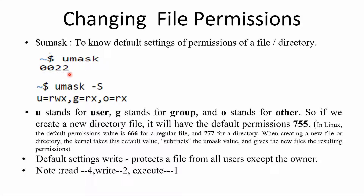The umask command specifies the mask value. This mask value will be subtracted from the default permissions. If you want to print the mask value symbolically, you can use the minus s option. You can then see the permission associated with the user as read, write, execute; group as read and execute; and others as read and execute.